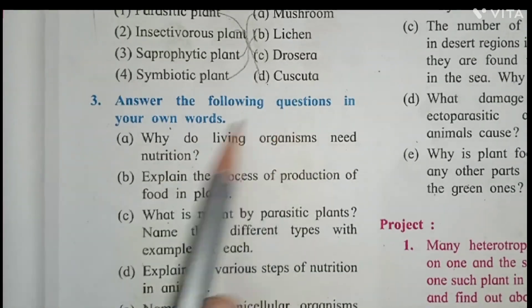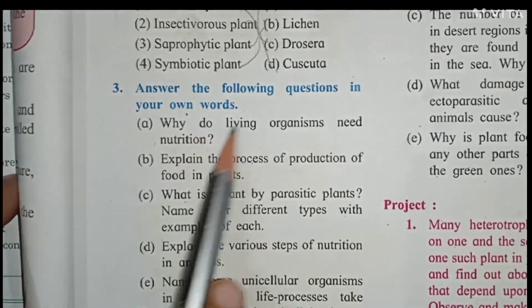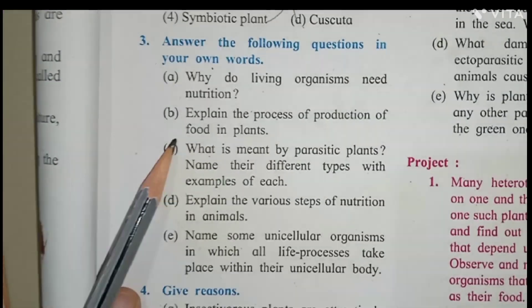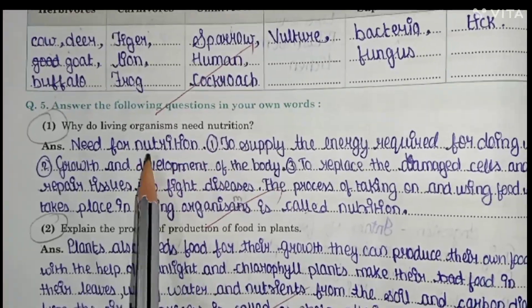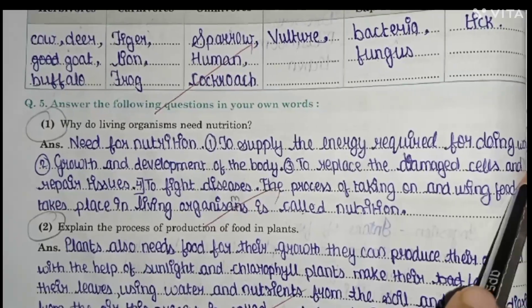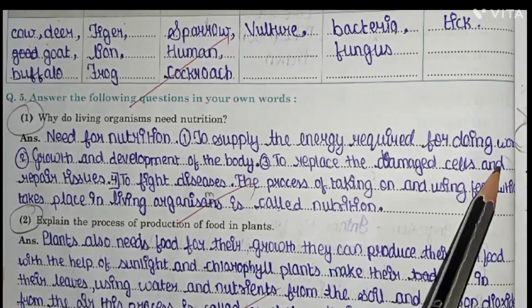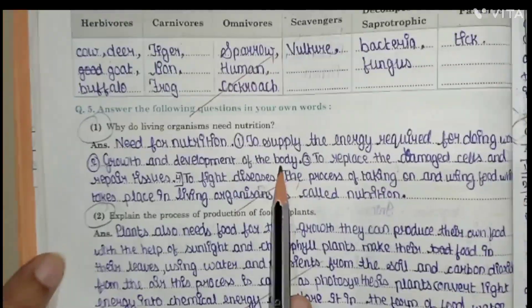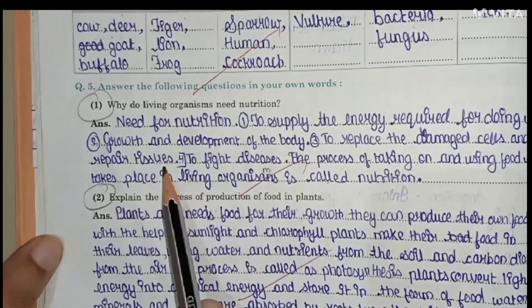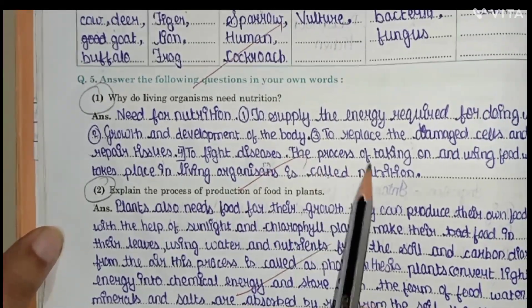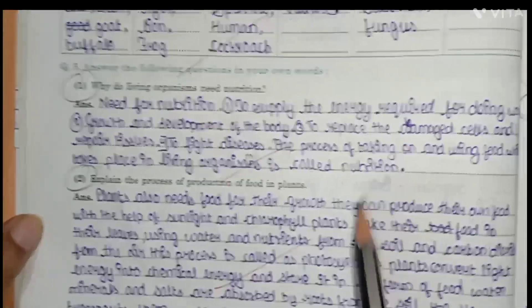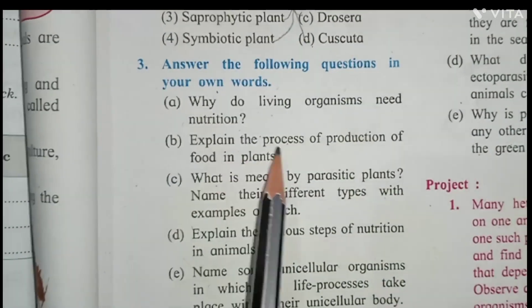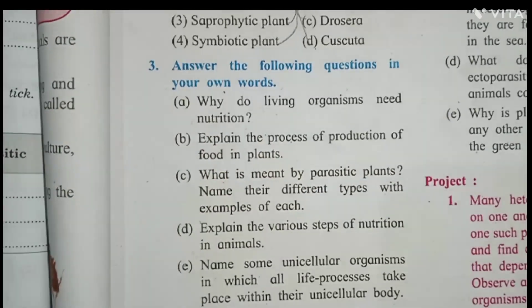Question number three: answer the following questions in your own words. First question — why do living organisms need nutrition? Nutrition is needed to supply energy required for doing work, for growth and development of the body, to replace damaged cells and repair tissues, and to fight diseases. The process of taking in and using food which takes place in living organisms is called nutrition.